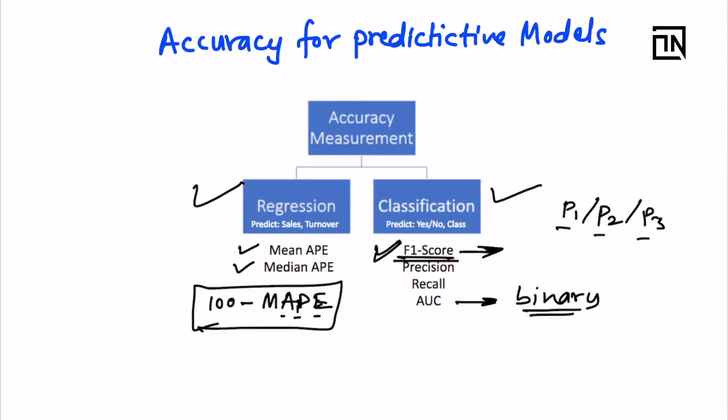F1 score is based on precision and recall. A common mistake is when people have only memorized theory: if I ask about a regression model and they answer precision and recall, I'll immediately reject that person. If you've really worked in the industry, you will never mistake F1 score for regression use cases or MAPE for classification, because you know these cannot be computed for the other use case.